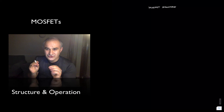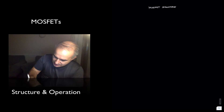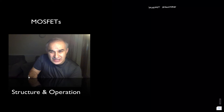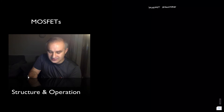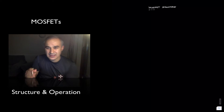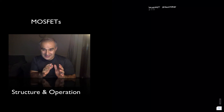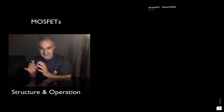Let's go over the MOSFET structure — the physical structure. MOSFETs: metal oxide semiconductor field effect transistors. The MOS has to do with the structure: metal oxide semiconductor.